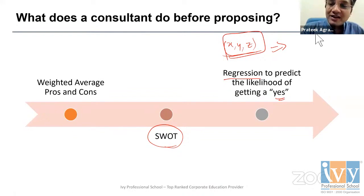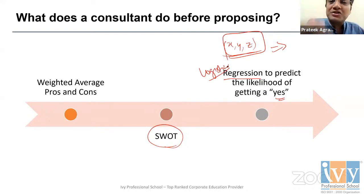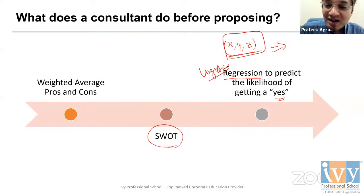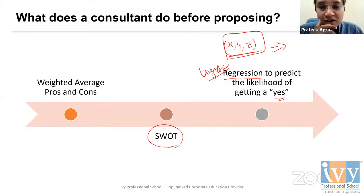Someone correctly pointed out that regression does not give a likelihood, but logistic regression does — a very good catch. Logistic regression gives you a likelihood, which is a classification model, of getting a yes or no. We will also have a little discussion on the difference between classification algorithms like logistic regression and supervised algorithms like regression where you label the data.